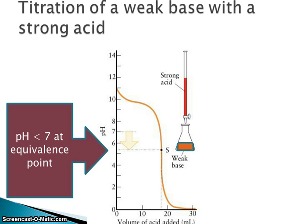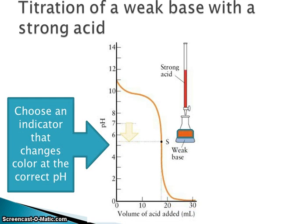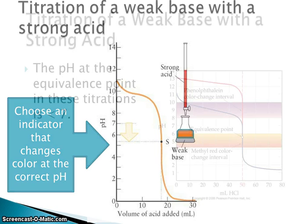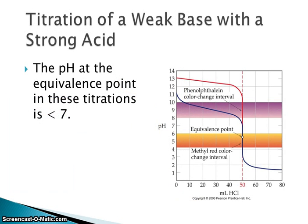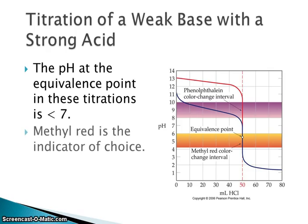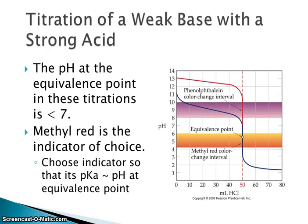The pH will be less than 7 at the equivalence point because of the presence of the conjugate acid. You need to choose an indicator that will change color at the correct pH — since the pH is less than 7, methyl red might be a good choice, something with a pKa close to the expected equivalence point pH for this titration. I hope you feel like you understand titrations a little bit better.